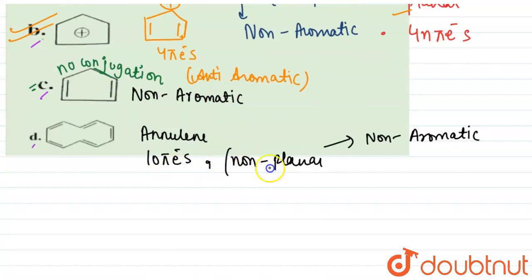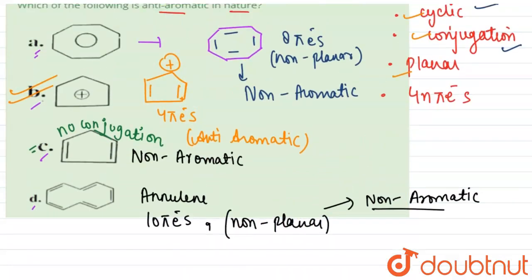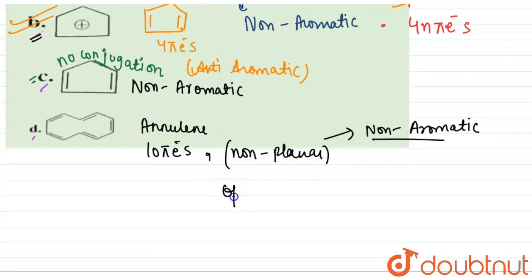But since these annulene has 10 pi electrons but it is non-planar, so it is non-aromatic. Hence it cannot be our answer. So all our compounds are non-aromatic except option number b. So our answer for the question is option number b. It is the anti-aromatic compound that is being asked in the question.